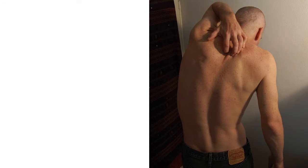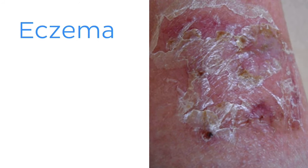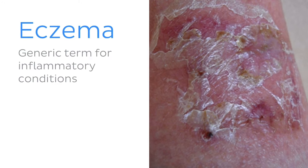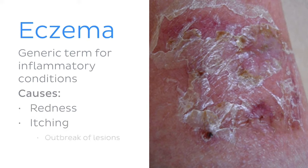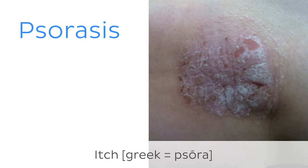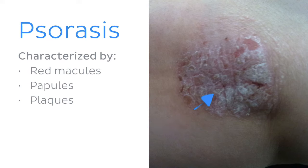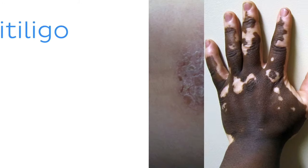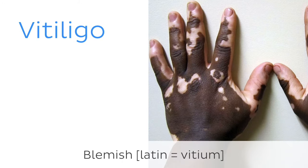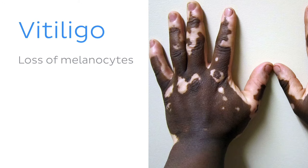Eczema is a generic term for inflammatory conditions of the skin, chiefly causing redness, itching, and an outbreak of lesions which may ooze or become encrusted. Psoriasis is a chronic, inherited condition characterized by vivid red macules, papules, and plaques covered in silvery, layered scales. Vitiligo is a progressive condition resulting in the loss of melanocytes that give color to the skin, producing white patches amongst normally pigmented skin.